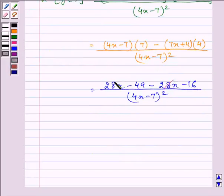Further, 28x will get cancelled out with negative 28x and we are left with minus 65 over 4x minus 7 the whole square.